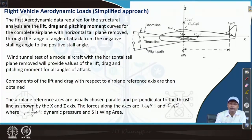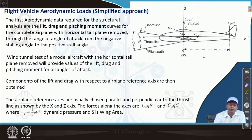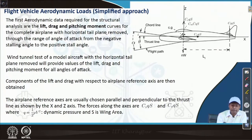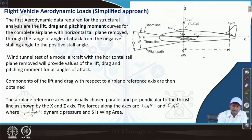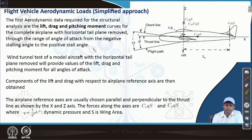Unless we have these data, we cannot design any aircraft. The load factor or the flight envelope gives us the maximum load that we need to multiply by n. Unless we have the lift, we cannot find out the maximum lift, design lift, or ultimate lift. We need to find out drag, pitching moment, and prepare these as curves with respect to alpha, the angle of attack. For the complete lift of the airplane with the horizontal tail plane removed, structural design covers the range of angle of attack from negative stalling angle to positive stalling angle.